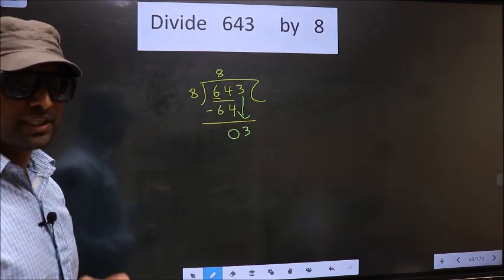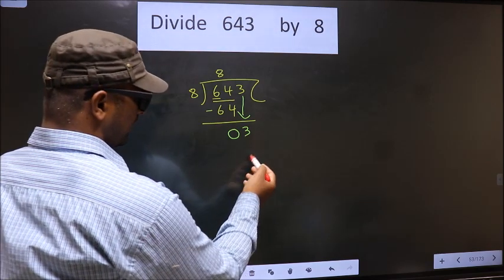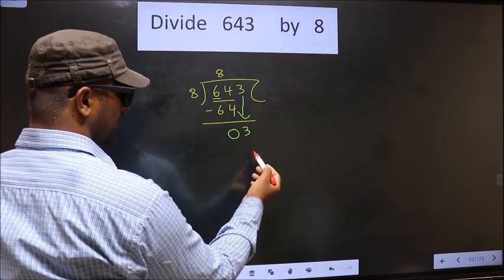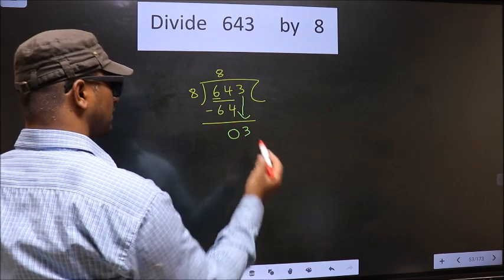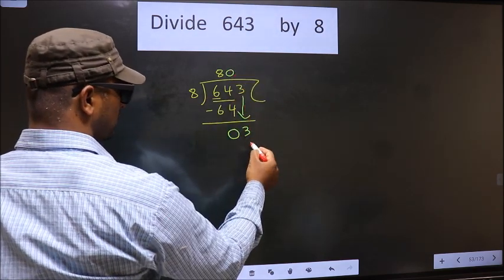Instead, what you should think of is, what number should we write here? If we write 8 here, that is larger than 3. So, what we do is, we take 0 here. So, 8 into 0, 0.